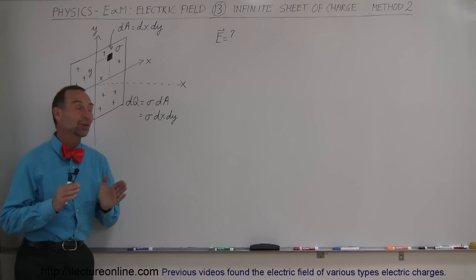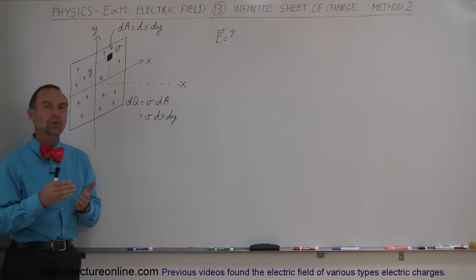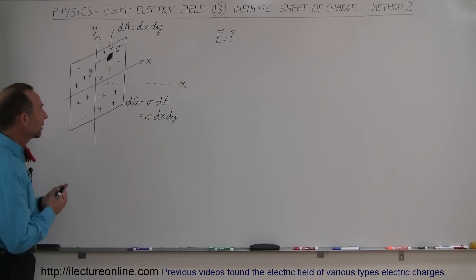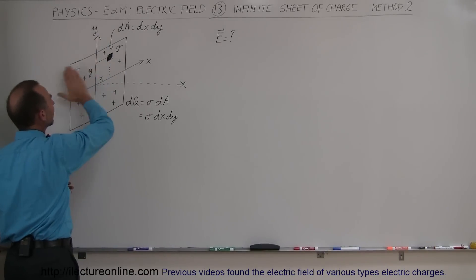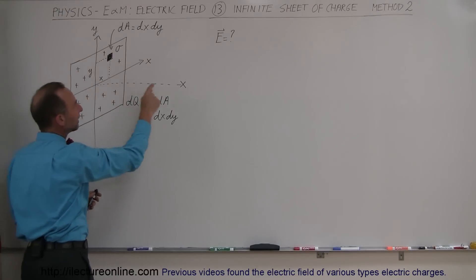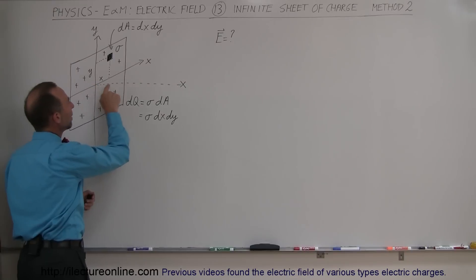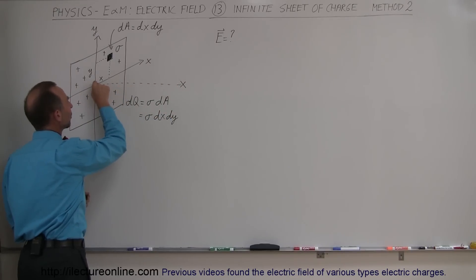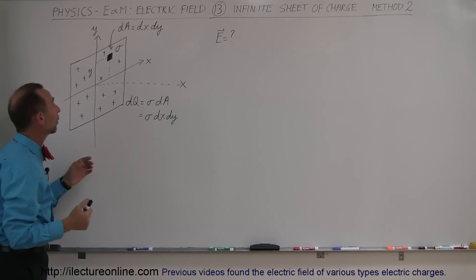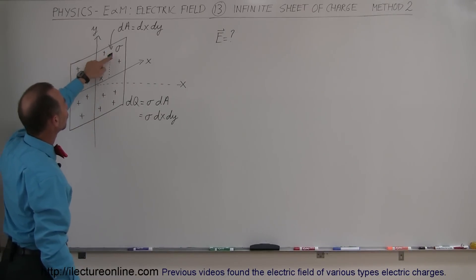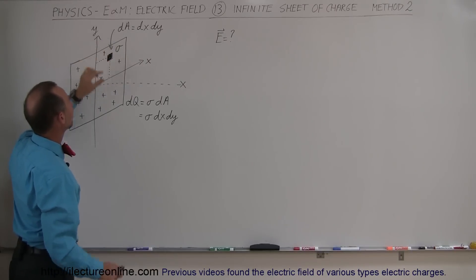Welcome to ElectraOnline. Here I'm going to do the same problem I did in the previous video, but instead of using polar coordinates we're going to use the x and y coordinates. We have an infinite sheet of charge that goes on infinitely in both the x and the y direction, and we want to know what the electric field strength is at some distance away from the sheet. We pick an arbitrary small area element called dA, which is equal to dx times dy.